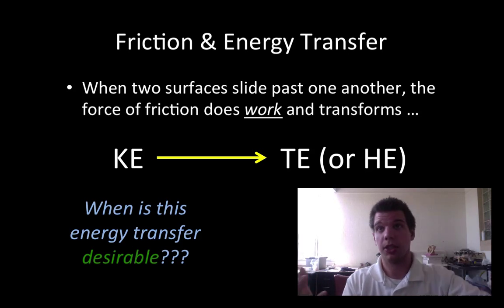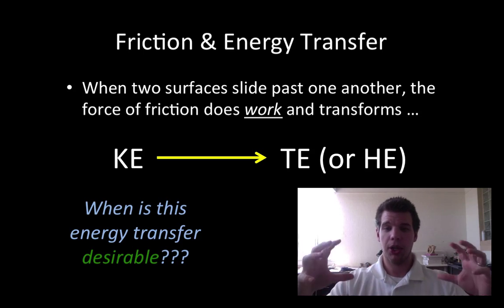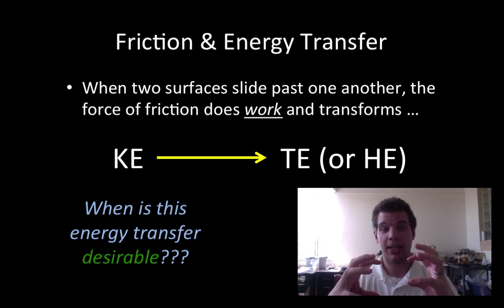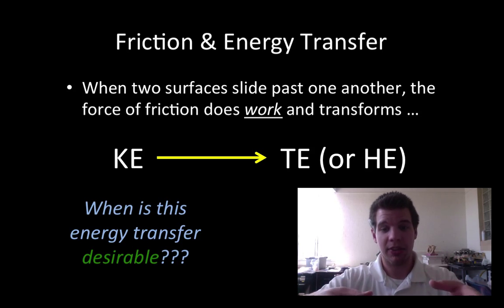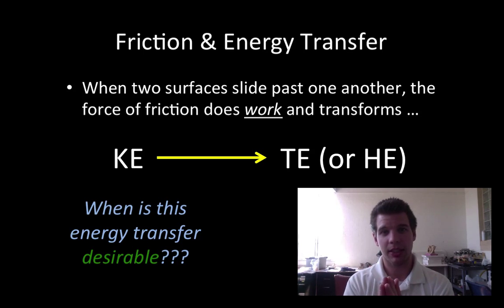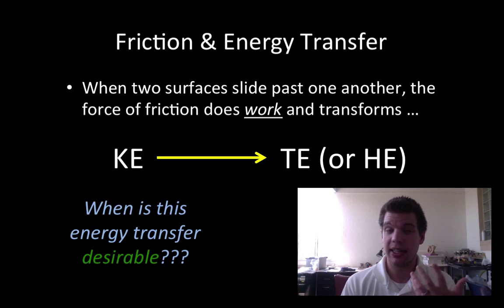Another desirable example is the car brakes. You're driving and you have a lot of kinetic energy, and now you slam your brakes on to stop. The brakes grab the tires and cause a lot of friction between the brake and the tire. That takes all the kinetic energy of the tire moving forward and transforms it into thermal energy — the brakes get really hot — but you're slowing your car down. That's a desirable effect.